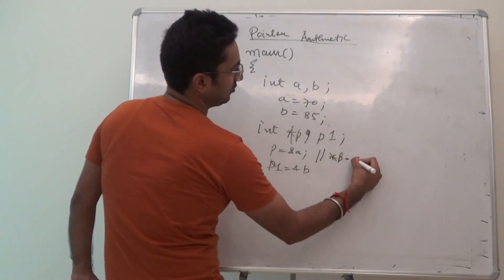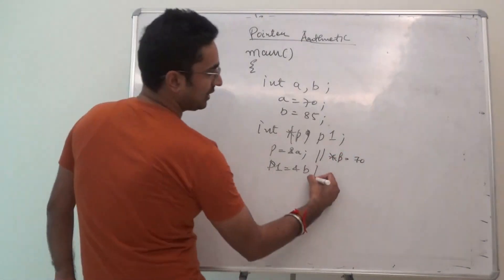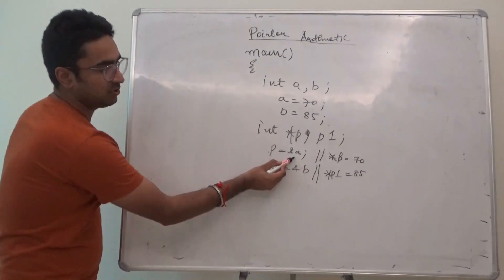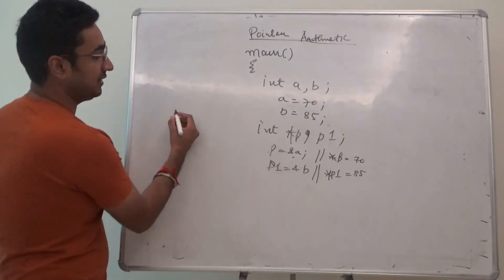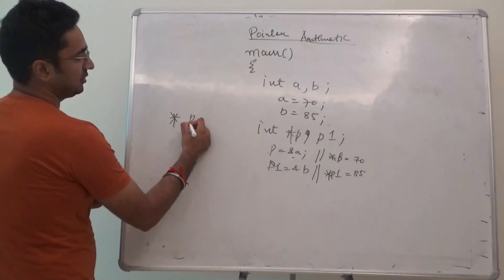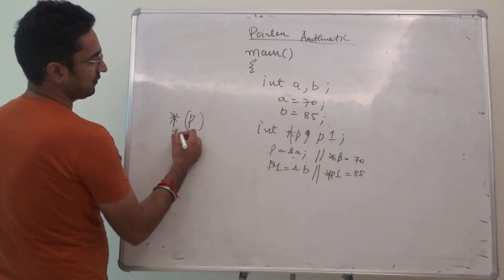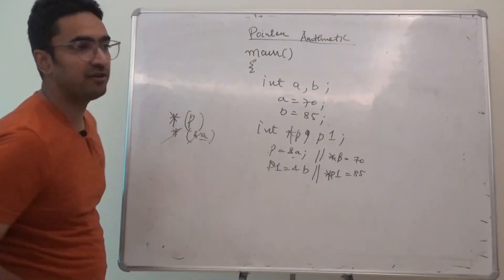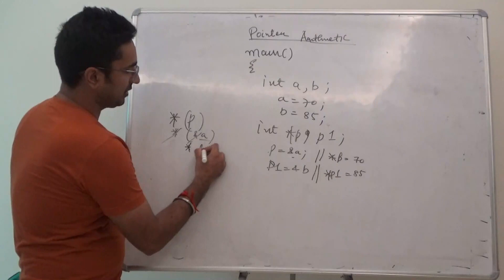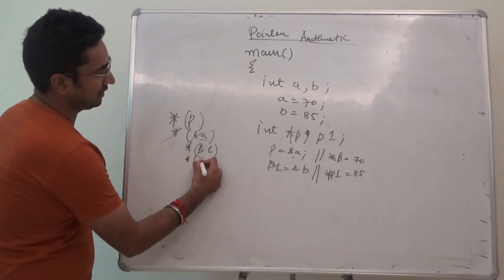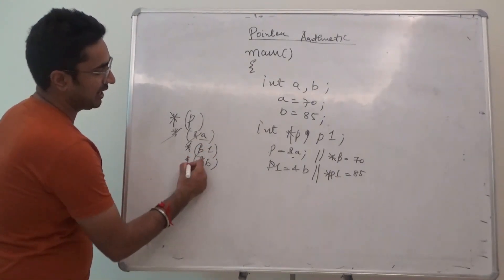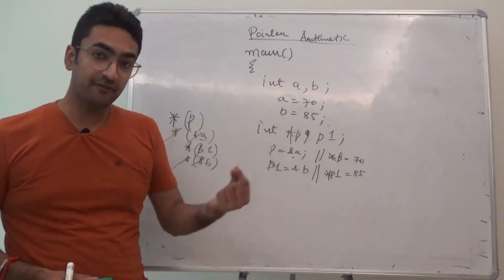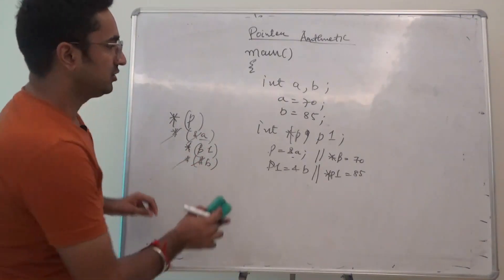So technically, star p value would be 70 and star p1 value would be 85. Because p is pointing towards a and if I want to dereference p, dereference p means dereferencing p address of a and the value of a will come. Same applies with star p1, p1 is actually storing the address of b and if I use dereference operator, the reference operator, the reference is taken out.